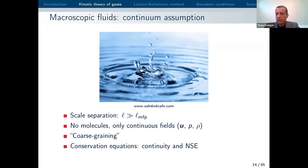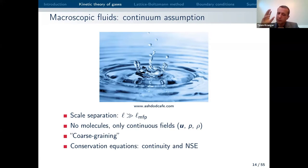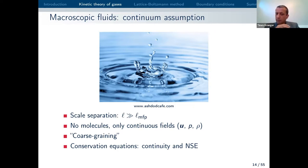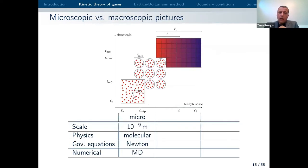In Navier-Stokes we don't have any molecules — there's nothing in the Navier-Stokes equation that tells you about the existence of molecules. You just have continuous fields: velocity, pressure, and density. We call this process coarse-graining, where we go from something small and resolved to something large where we reduce the number of degrees of freedom and look at effective properties. What we get as output would be the continuity equation — telling us something about mass conservation in mathematical form — and the Navier-Stokes equation under some assumptions.